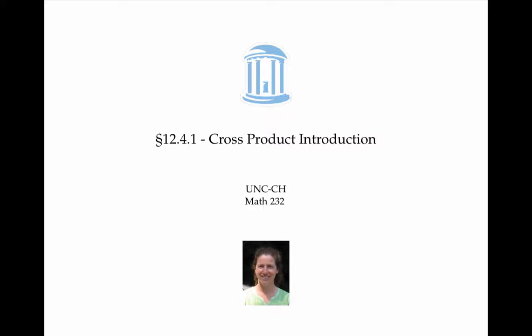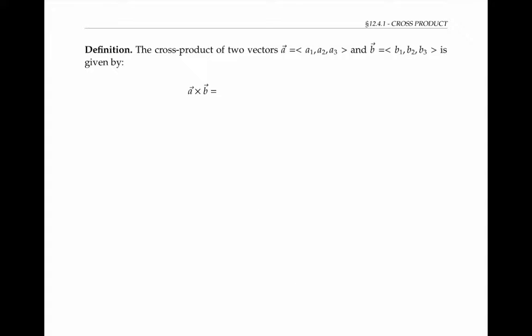This video gives an introduction to the cross product of two vectors. The cross product is defined for vectors in three dimensions. If we're given two vectors in terms of their components, then we can define the cross product as the determinant of the following expression.